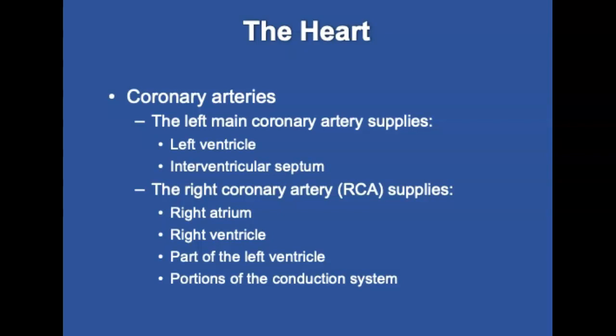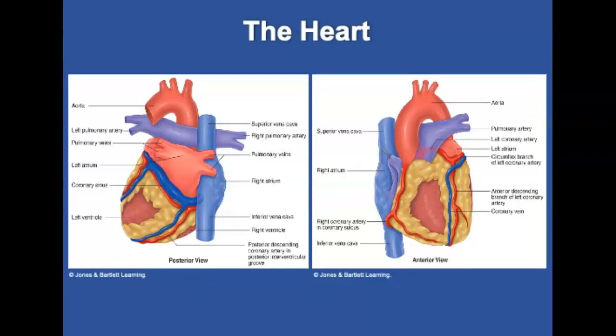The right coronary artery, or RCA, branches off and supplies blood to the walls of the right atrium and ventricle, a portion of the inferior part of the left ventricle, and portions of the conduction system — the SA node in about 60% of people, and the atrioventricular bundle in about 85% to 90% of people. The figure on this slide shows the coronary arteries from both the anterior and the posterior view.